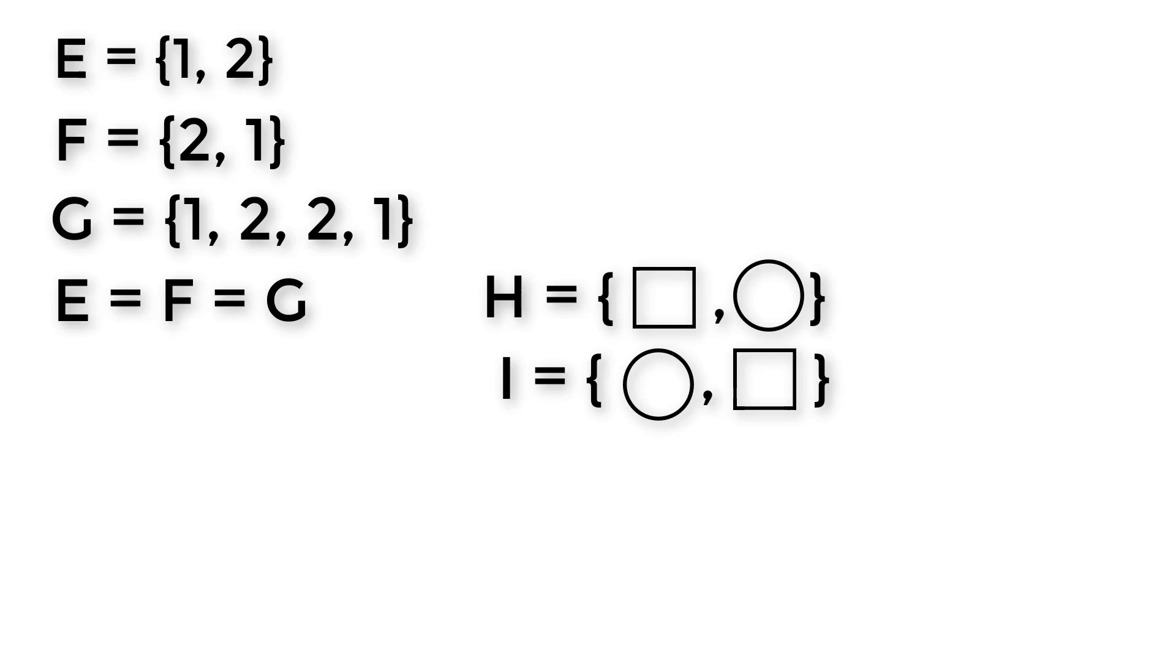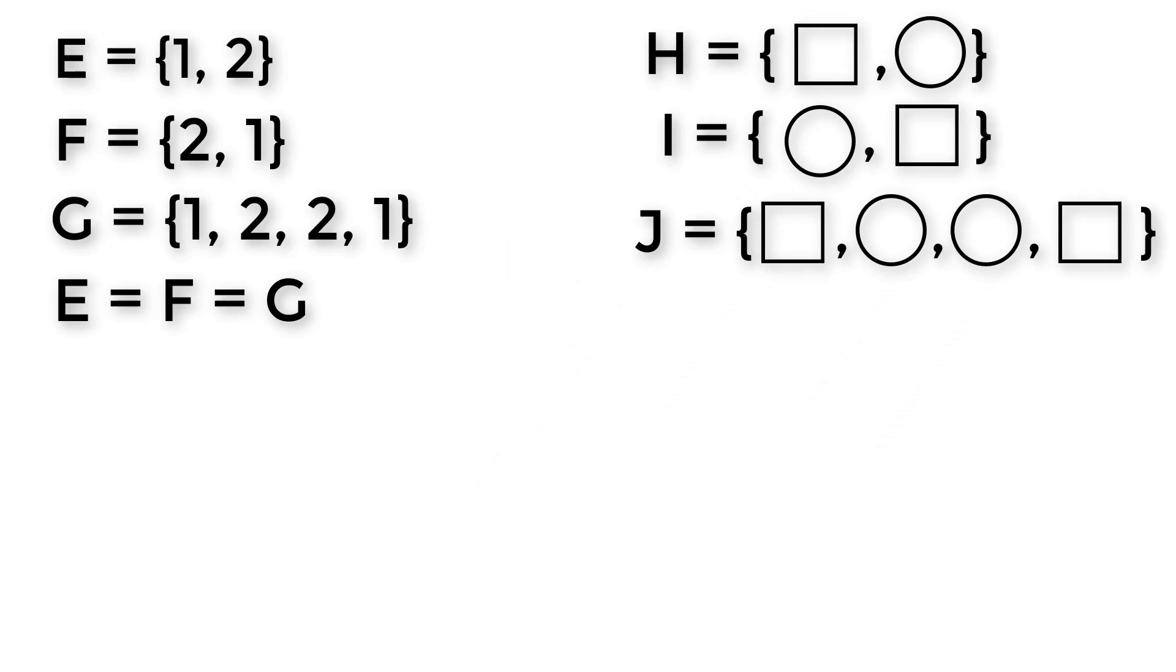Now suppose we have another set J and the elements are two circles and two squares arranged like this. This is also a set of circle and square. No matter how many squares or circles are here, it is still a set of circle and square, like H and I. This is why repeating the elements do not alter the set, and we can say H equals I equals J.